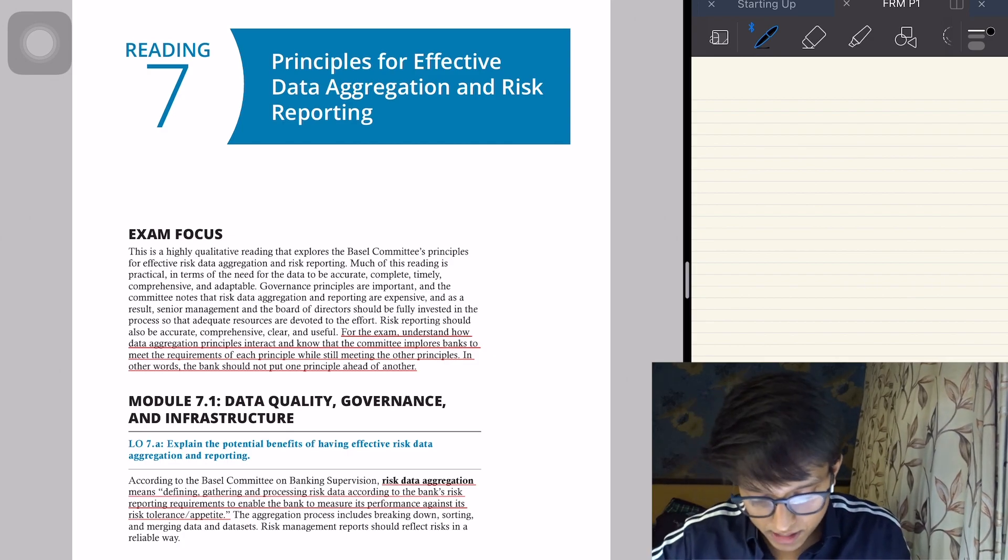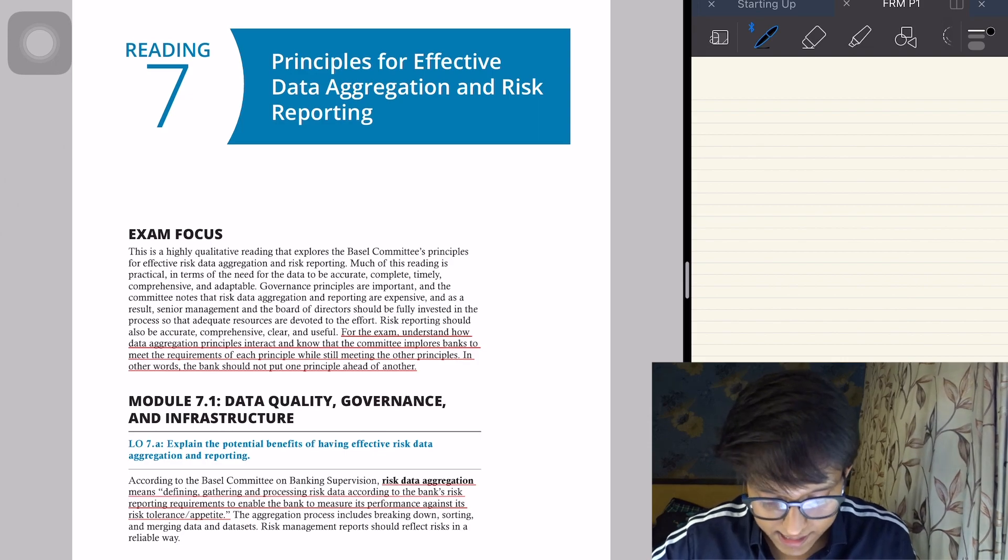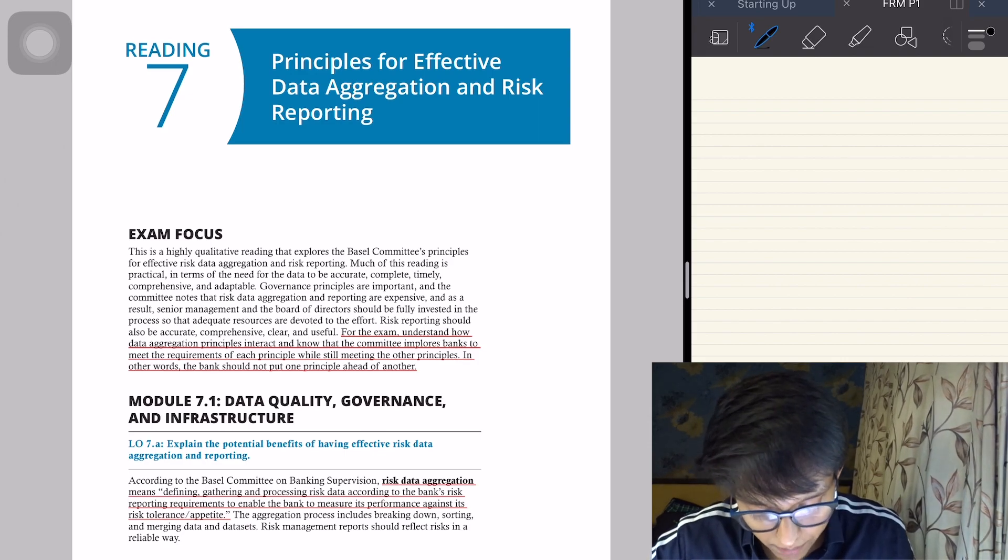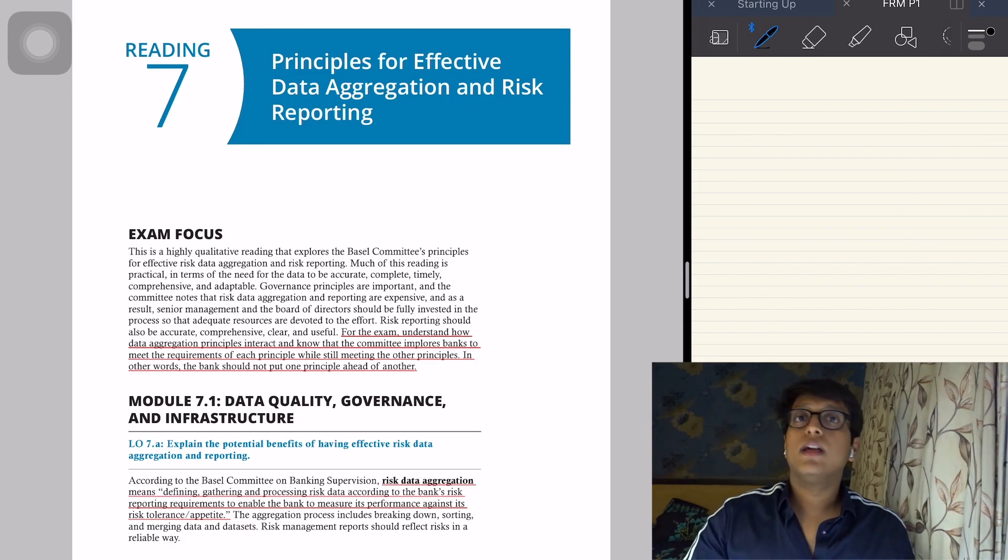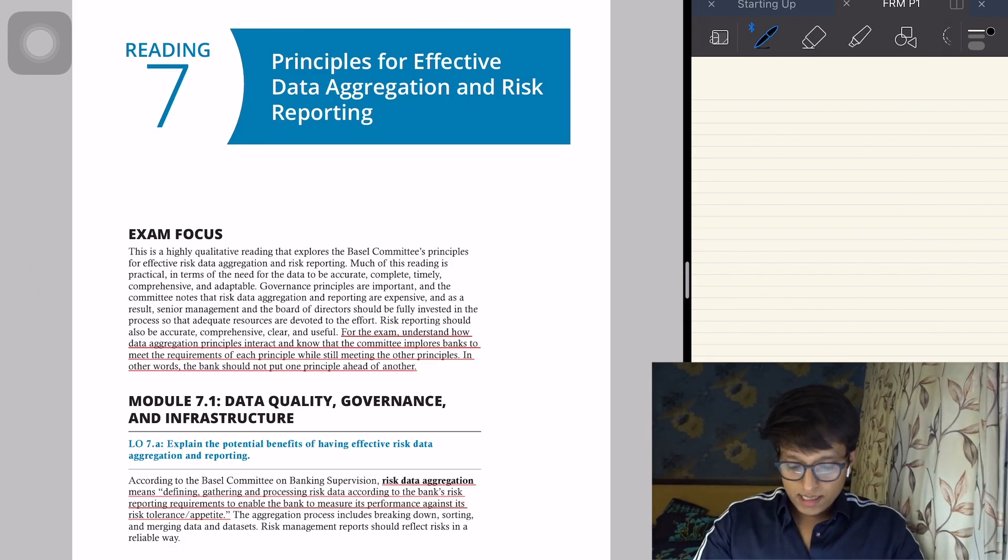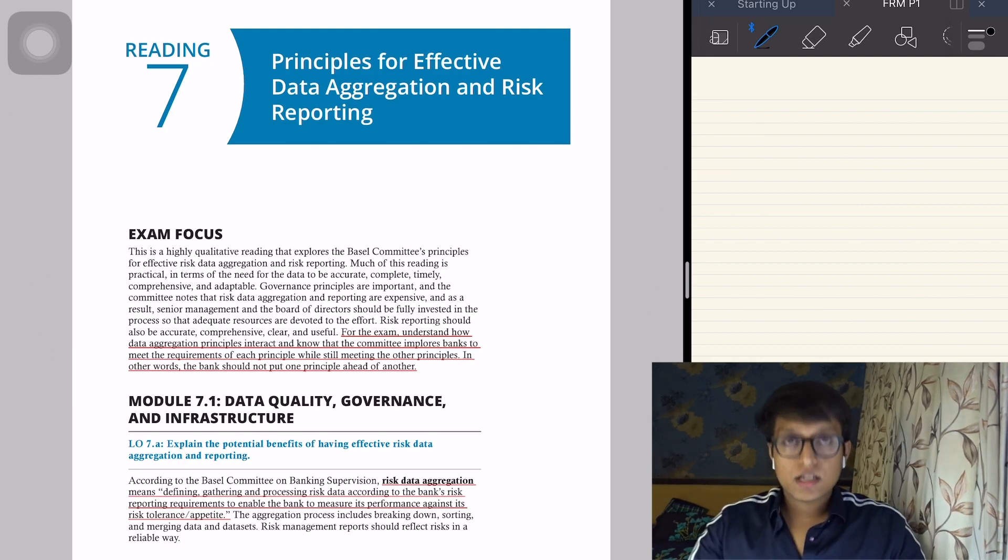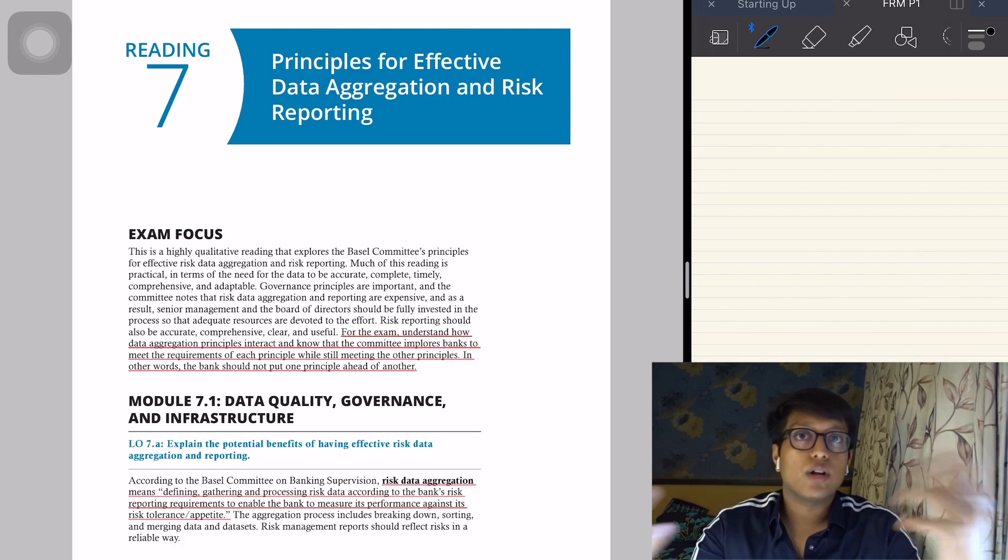Risk data aggregation means defining, gathering and processing risk data according to the bank's risk reporting requirements to enable the bank to measure its performance against risk tolerance or appetite. It's a risk measurement process and a performance measurement process. It's a holistic approach to the entire organization.